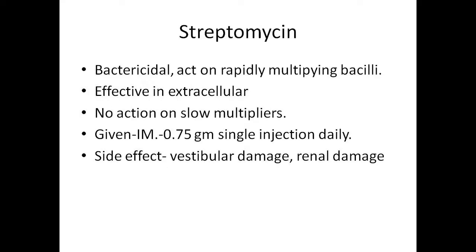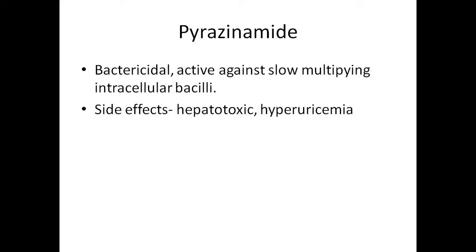The next drug is Streptomycin. It is a bactericidal drug that acts on rapidly multiplying bacilli. It is effective in the extracellular environment with no action on slow multipliers. The route of administration is IM. The side effects are vestibular damage and renal damage. It is also used as a first line drug. Pyrazinamide is also a first line drug — a powerful bactericidal drug. It is active against slow multiplying intracellular bacilli. The side effects include hepatotoxicity and it causes hyperuricemia.